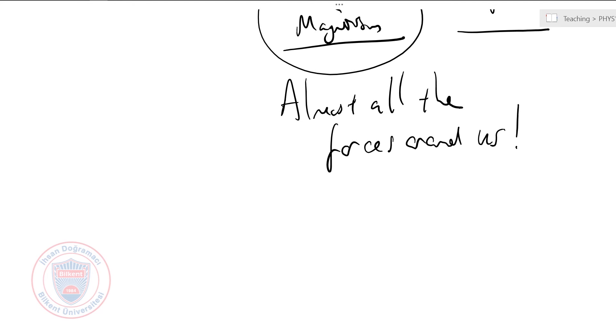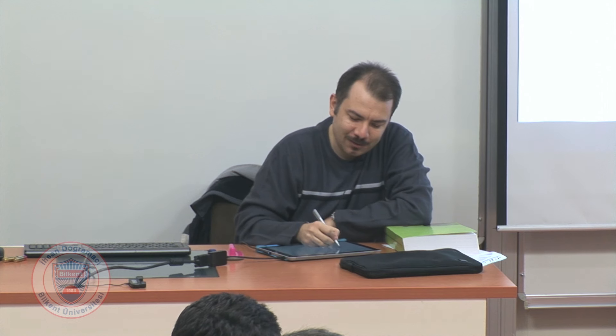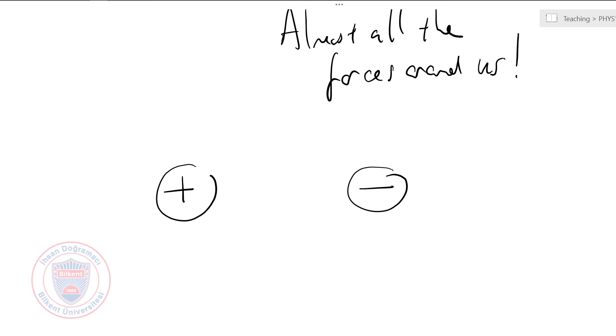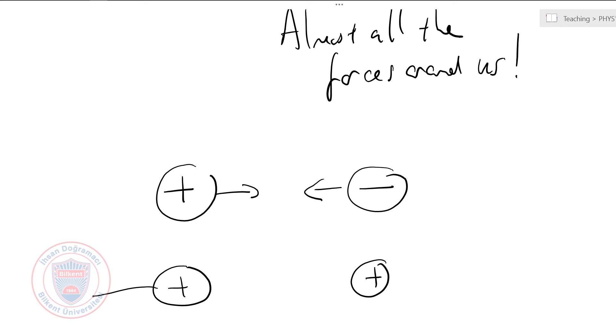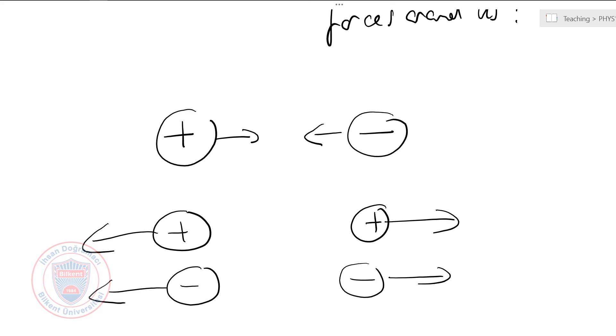Physics is an experimental science. People first noticed that sometimes small objects could be attracted or repelled by rubbing different materials together. At some point they understood that there are two kinds of electric charge — two polarities. There is plus charge and minus charge. If you have a plus charge and a minus charge, unlike charges attract each other. Two like charges repel.